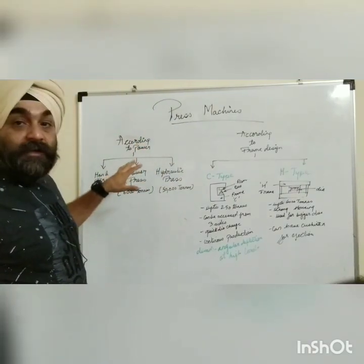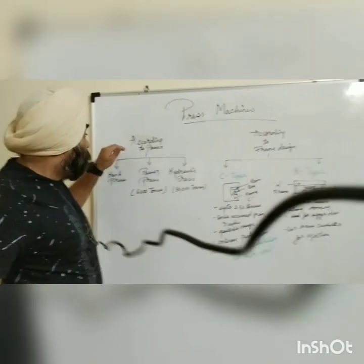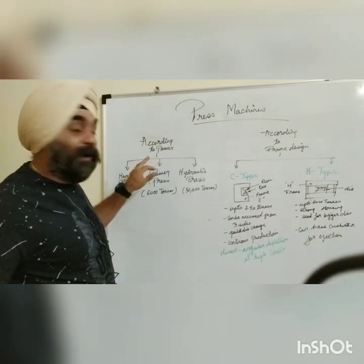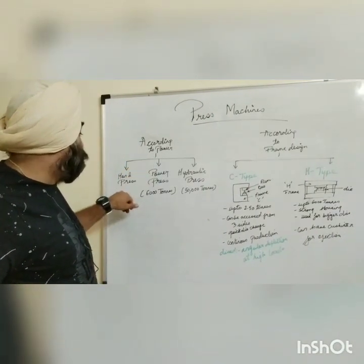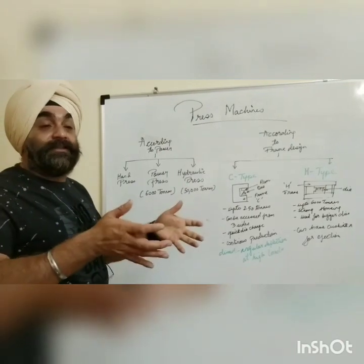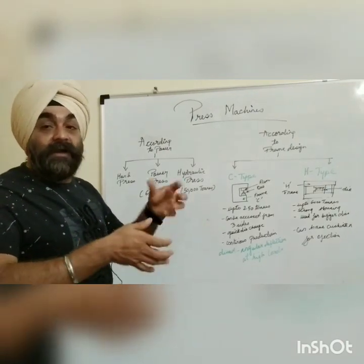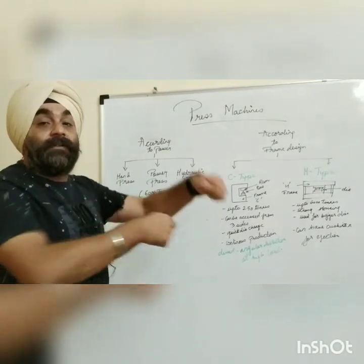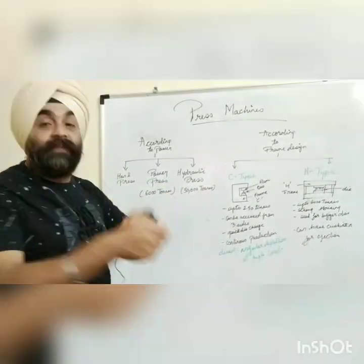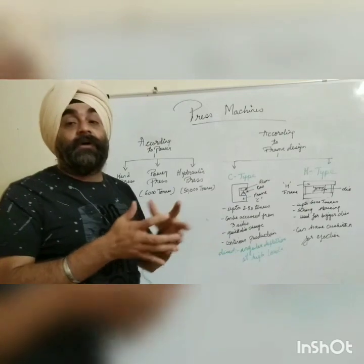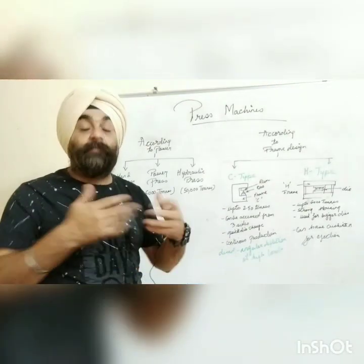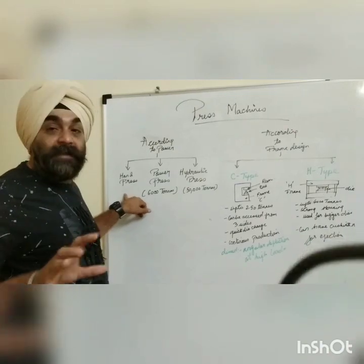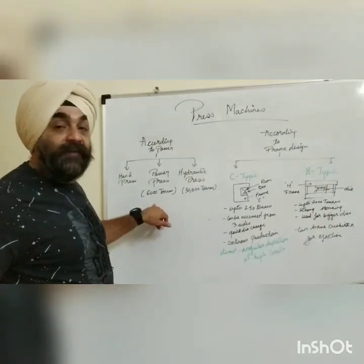You can classify the press according to the power source. First, according to power, is the hand press — you will have a ram, a screw, and a screw-and-nut type. The operator moves it with the hand, so whatever force there is will be equal to the hand pressure. This is the very basic press.